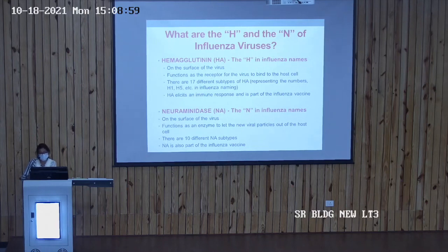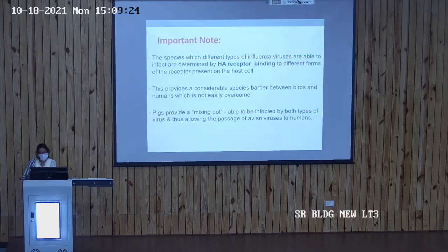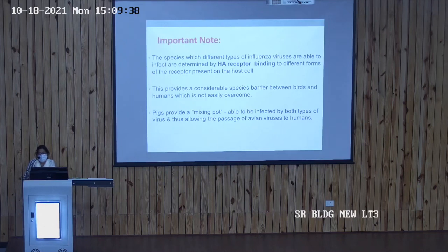Neuraminidase (NA) is the second surface protein. It is present on the surface of the virus and functions as an enzyme to let the new viral particles out of the host cell. There are about 10 different subtypes of neuraminidase, and it is also part of the influenza vaccine. The species that different influenza viruses can infect are determined by HA receptor binding to different forms of the receptor present on the host cell.